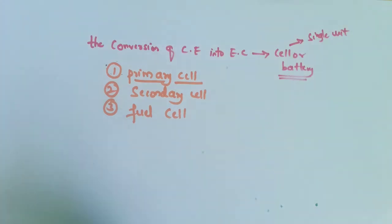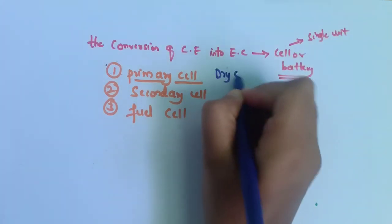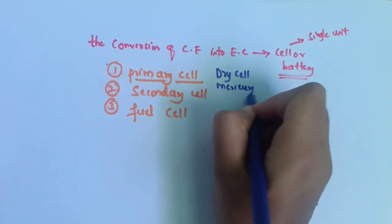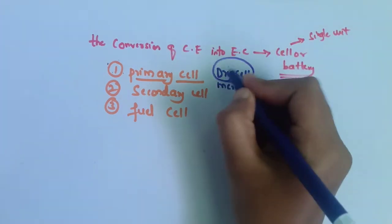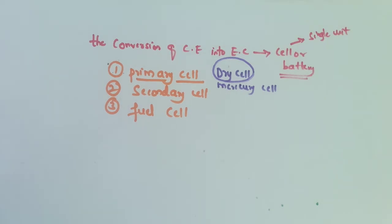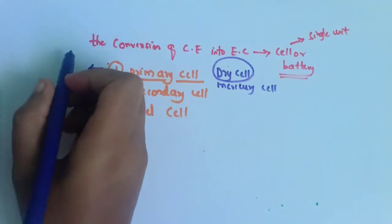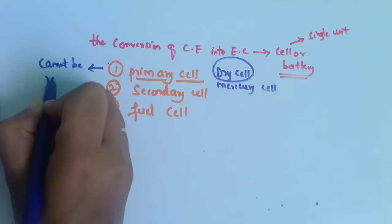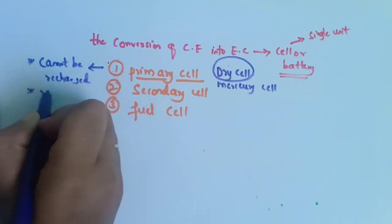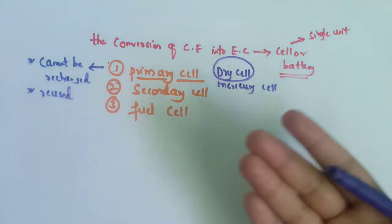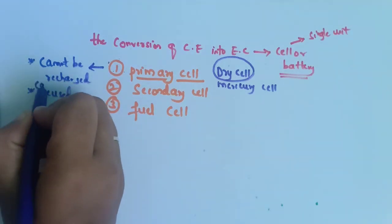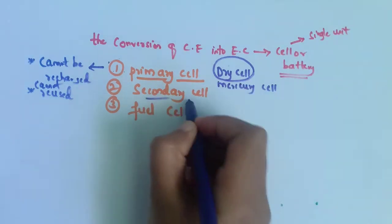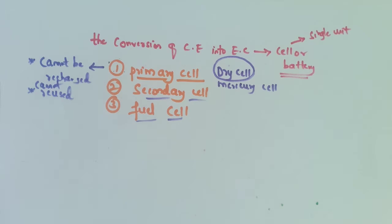In the primary cell there are two types: the dry cell and the mercury cell. In this video we are going to learn about the dry cell, also called the Leclanche cell. Primary cells cannot be recharged or reused, whereas secondary cells can be recharged and reused. This is the key difference between primary and secondary cells.